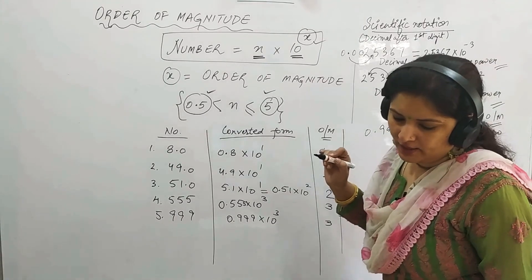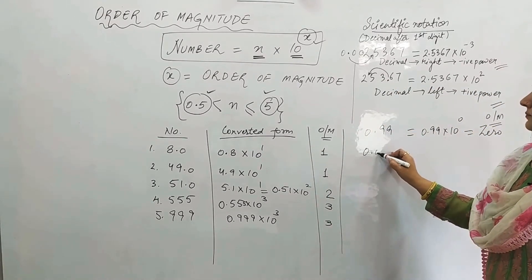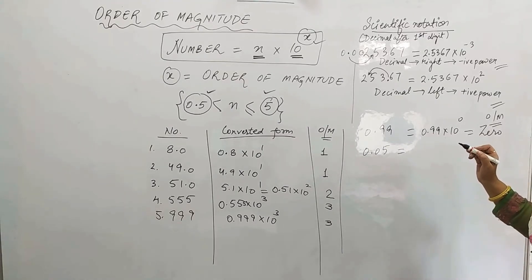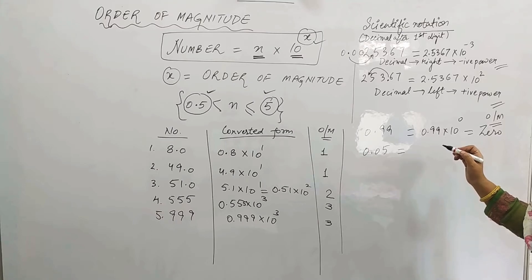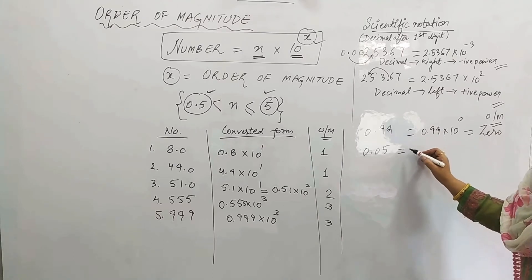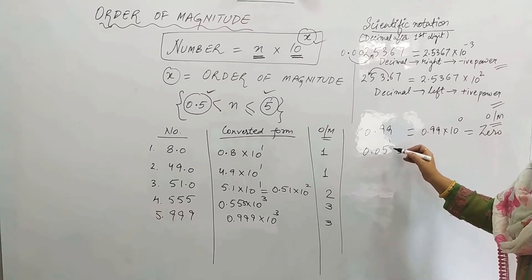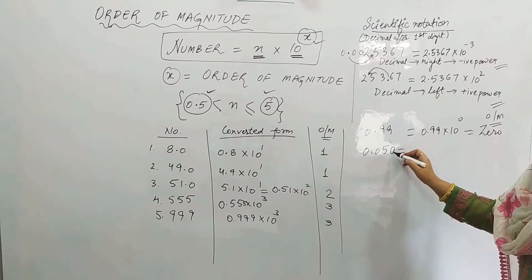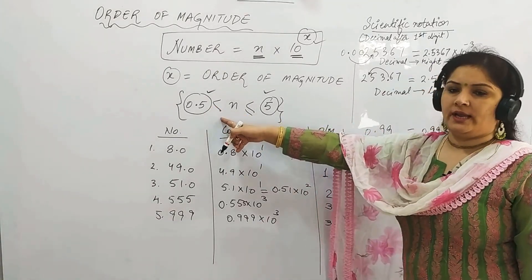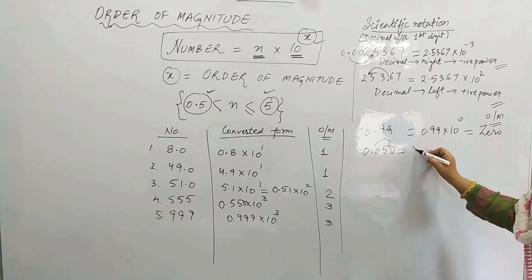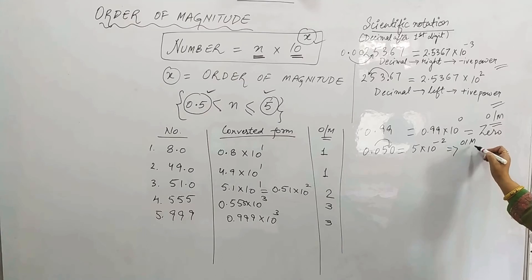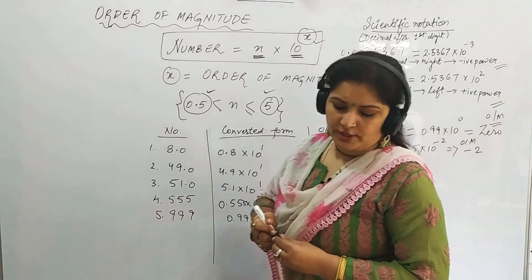Now take 0.05 — tell me the order of magnitude. The answer is minus 2. We bring the decimal here: if we write 0.5 × 10⁻¹, 0.5 is not greater than 0.5 (it must be strictly greater), so we write it as 5 × 10⁻². Therefore, the order of magnitude is minus 2. I hope you understood this.